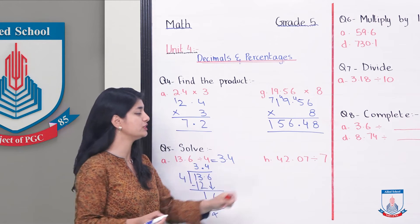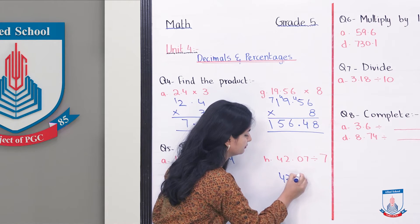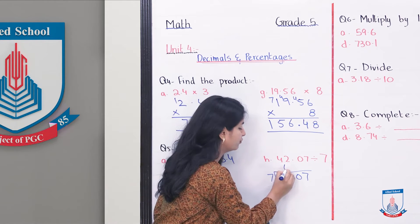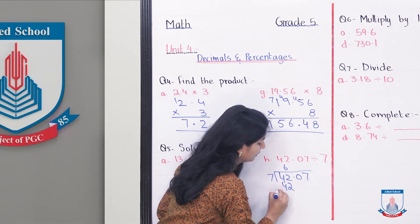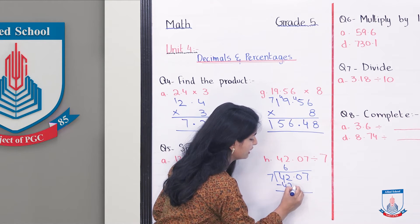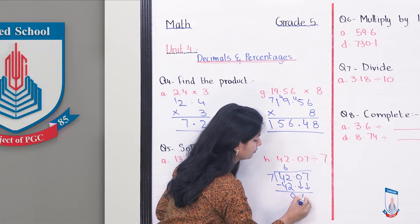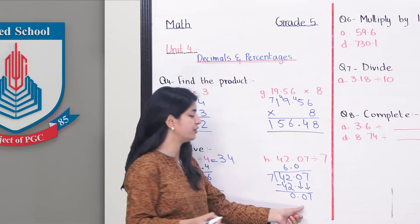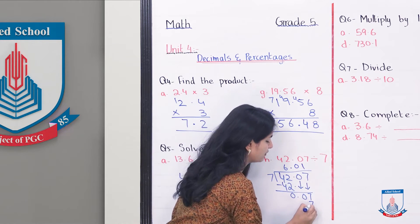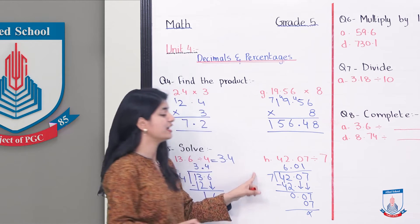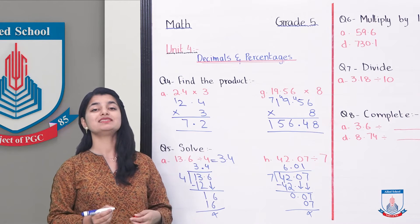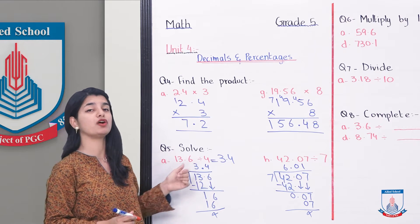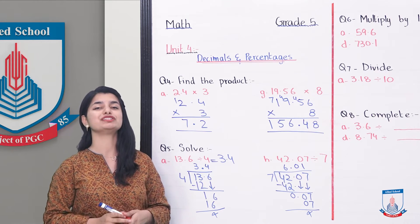If we look at part B: 42.07 divided by 7. 7 sevens are 42, so 6. Then 7 into 0 is 0. And then 7 ones are 7. So, this would be our answer: 6.01 for that part. In this way, you have to solve the other questions here, by regularly dividing decimal numbers by whole numbers. And with that, we are done with question number 5 as well.